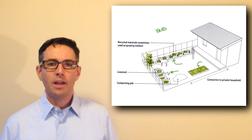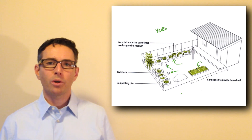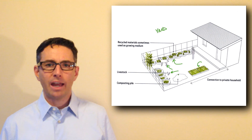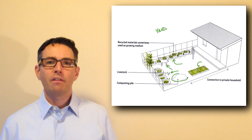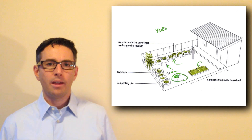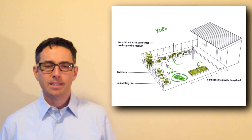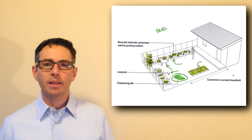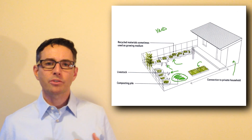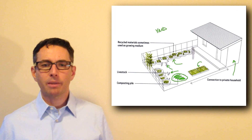There's a chicken in this picture, and it also shows support for other aspects of agriculture — for example, a compost pile. This yard is connected to a private household and becomes a source of food and profit in some cases for that household.